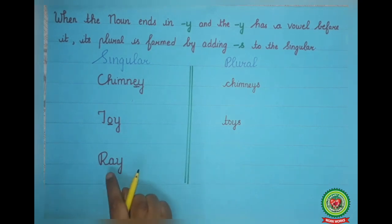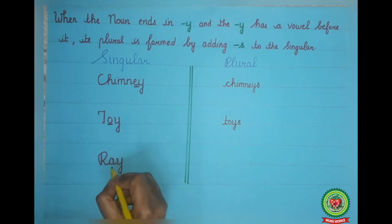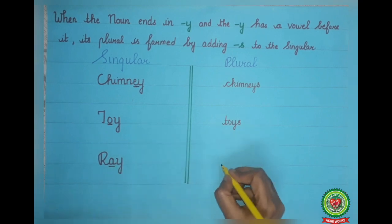Next example: ray. Again, the singular noun ends with Y but before Y, the letter A is there, which is a vowel. So we will just add S to make it plural. The plural noun will be rays.